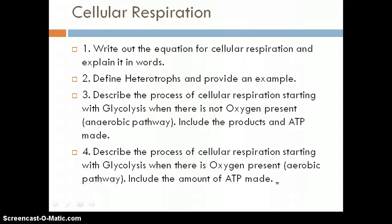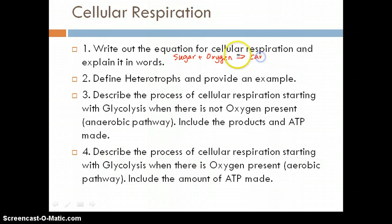Alright, cellular respiration, if we go on to the next part. The equation for cellular respiration is going to be sugar plus oxygen produces carbon dioxide plus water plus energy. It's kind of the opposite of photosynthesis. So heterotrophs are organisms that eat things for energy. They can't make their own energy. An example would be us.